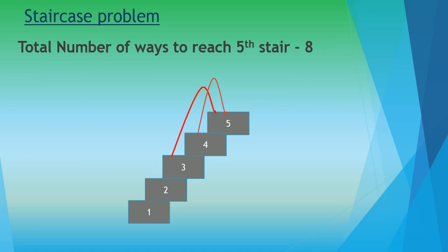Here is a graphical representation of the problem. As you can see, we have a flight in front of you. There are five steps in this flight of stairs and we need to find out in how many ways we can reach the fifth stair. As per the limitations, you can reach the fifth stair from stair number four or you can reach the fifth stair from stair number three.